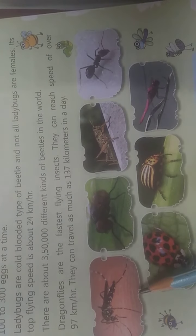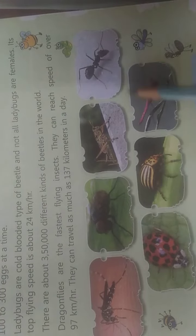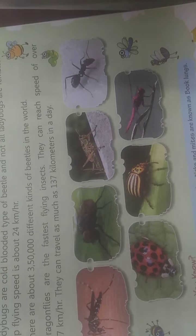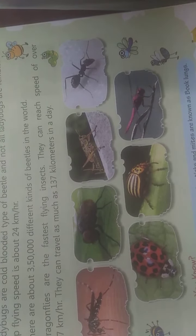Dragonflies are the fastest flying insects. They can reach speeds of over 97 km per hour and can travel as much as 137 km in a day. Here different insects can be seen. The respiratory organs of spiders, scorpions, ticks, and mites are known as book lungs.